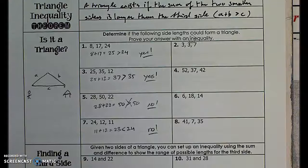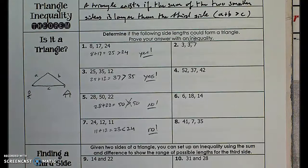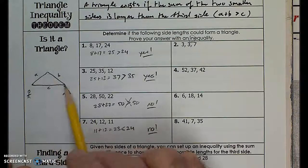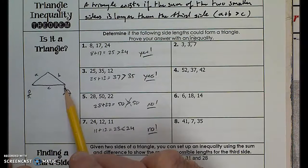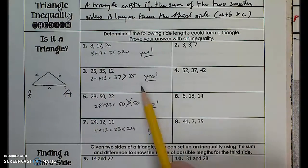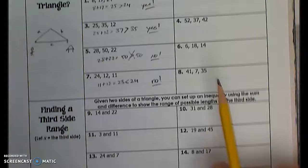We're in packet 5.2, and we are on page 7. So, we just learned about a triangle — the two shorter sides have to be longer than the third side. They have to be longer than the longest side, otherwise you can't create a triangle. That's what we saw over here.